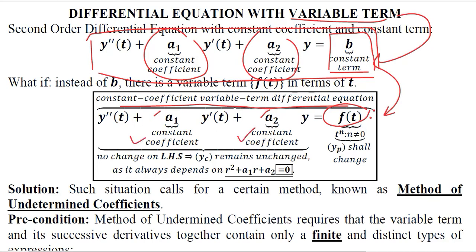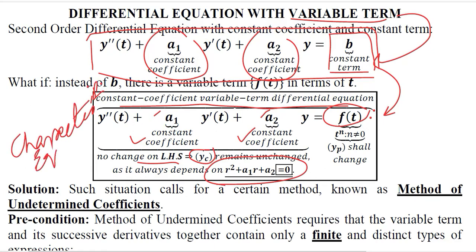The left-hand side remains the same as before, and you know the left-hand side helps us find the complementary function. So if the left-hand side is the same, the complementary function will also be calculated using the same method. When we find the complementary function, we depend on the characteristic equation, and in that equation the right-hand side is zero. So the variable term on the right-hand side does not affect yc, the complementary function. After confirming yc remains the same, let's talk about yp.